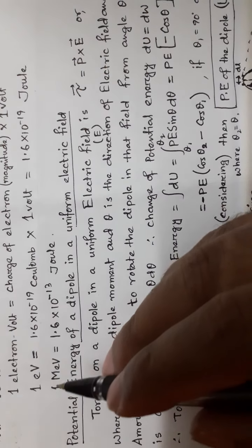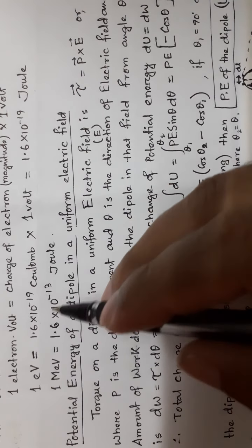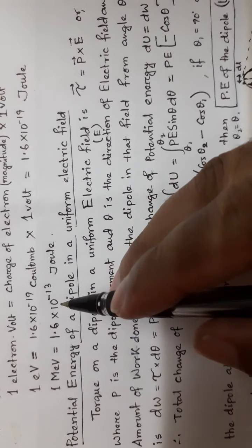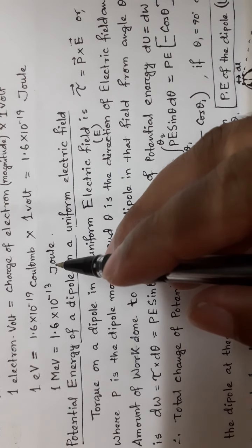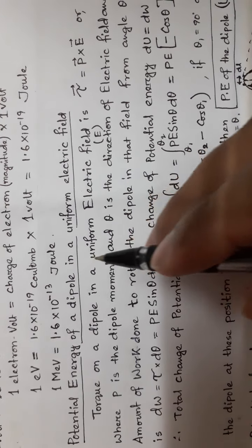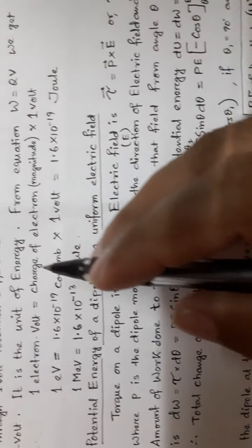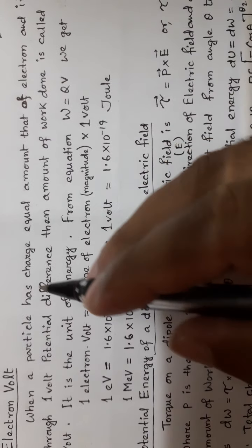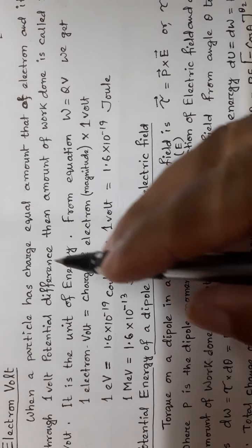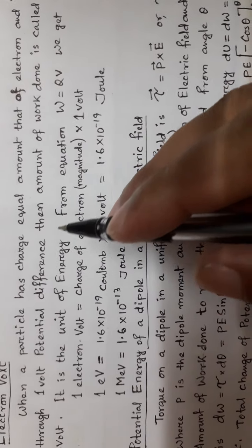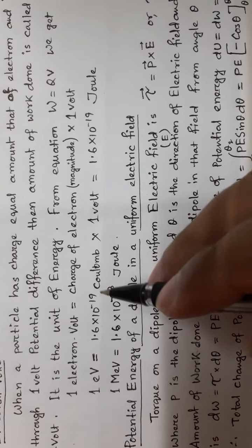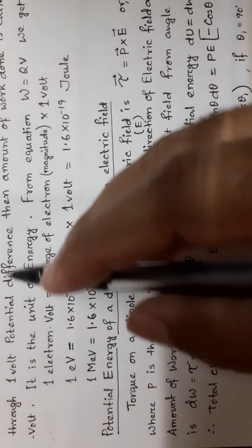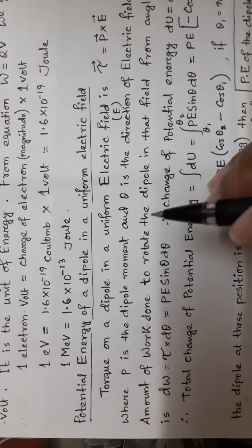Mega electron volt is 10 to the power 6. The power is 6 plus minus 13, giving minus 13 joules. This is 1 electron volt, and the electron volt is used in modern physics as a unit of energy.